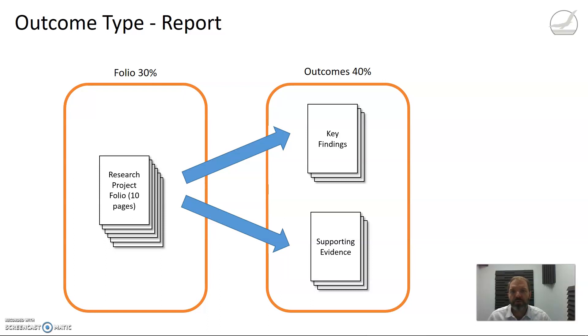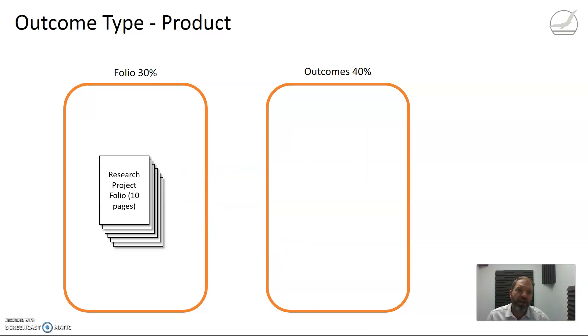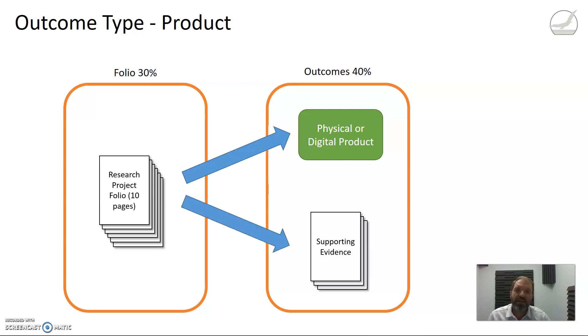For some research projects, you'd be looking more at a product of some sort. You do your research about how best to produce the product, and so the outcome from your research is a physical or digital product. But again, that needs to be supported by some evidence. Now that's going to look a little bit different depending on what type of product you have. But really, it's around what's the evidence that you used from your research to make the choices you did about your product.